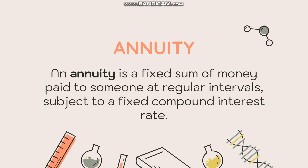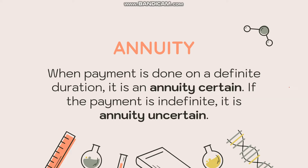There are two types of annuity: annuity certain and annuity uncertain. Annuity certain means the payment is done over a definite duration — there is a certain period wherein you have to pay the given amount. For example, you have to complete the payment of your housing loan for 30 years, or complete the payment of your postpaid plan for two years.